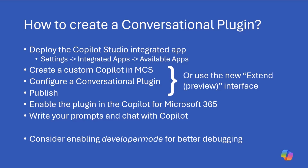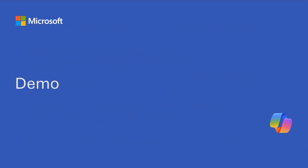One technique is to create a new custom Copilot, go into the Copilot extensibility section, and create a conversational plugin from there, then publish it. Another option is to use the new extended preview interface in Copilot Studio. I will show you both. Then we can enable the plugin in Copilot for Microsoft 365 and chat with Copilot, getting answers enriched by the custom plugin. You can also enable developer mode to better understand what's happening under the cover when one or more plugins are enabled.